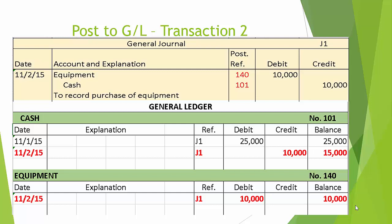Transaction number two: the debit to equipment is posted to general ledger account 140. Notice the entry of the general ledger account number in the journal after posting. In the equipment general ledger account, we see the date November 2nd, reference J1 (journal page 1), a debit posting of 10,000, and a balance of 10,000 — a debit balance. A credit to cash, which is an asset account, is a credit of 10,000. Therefore, the cash balance is 25,000 minus 10,000, leaving a new balance of 15,000.